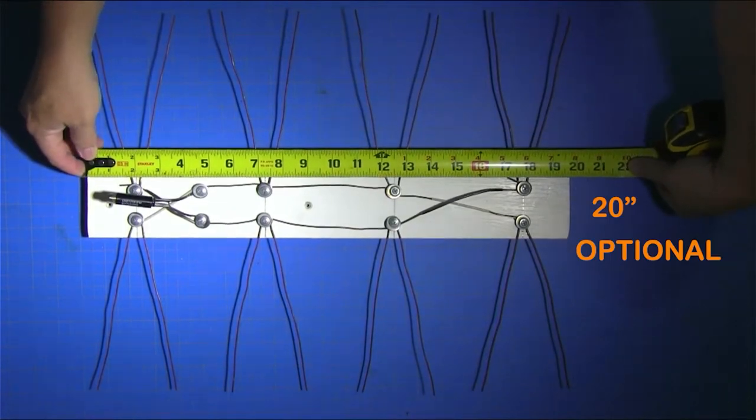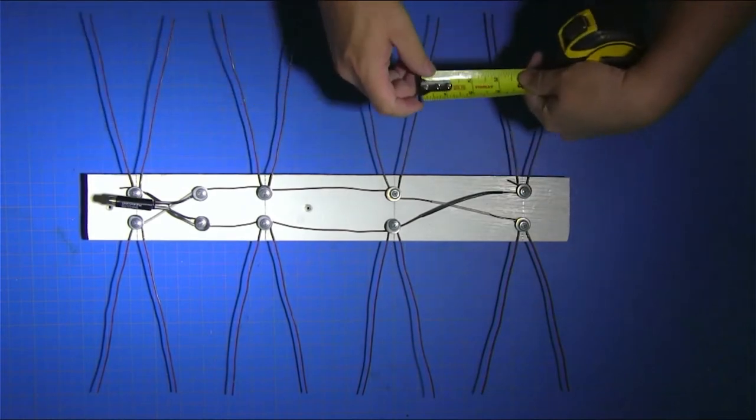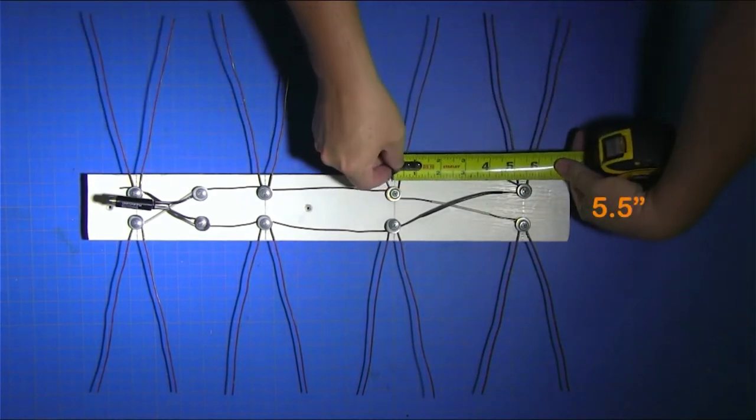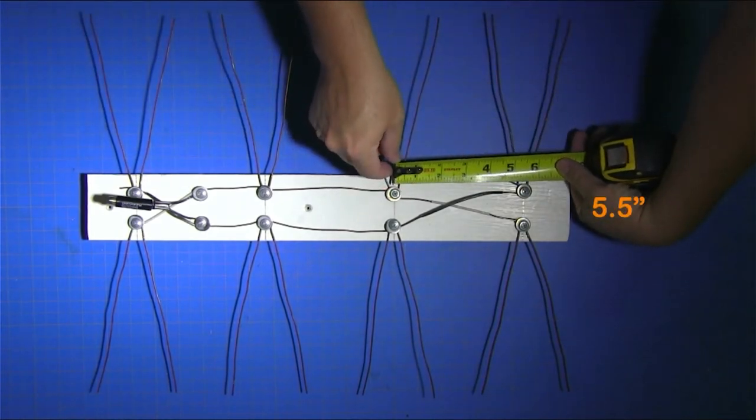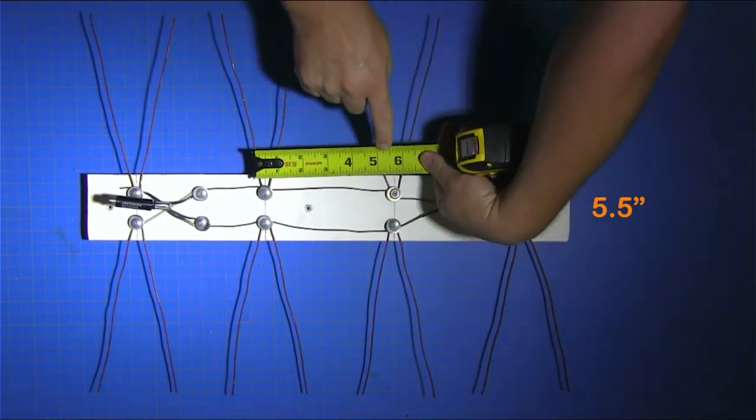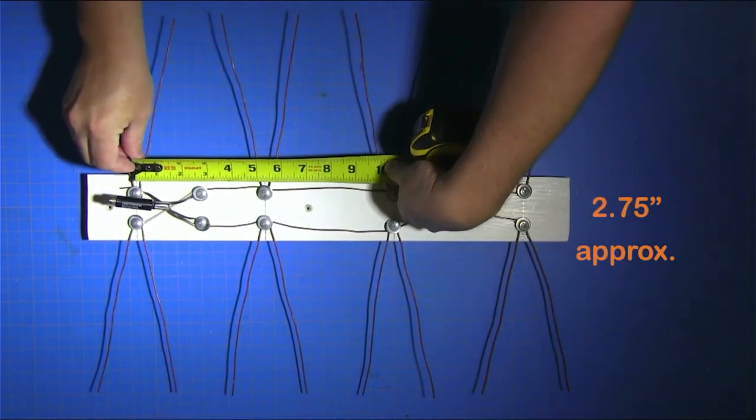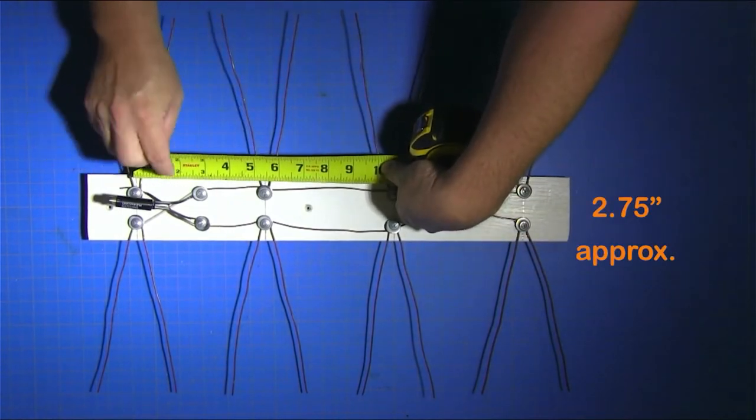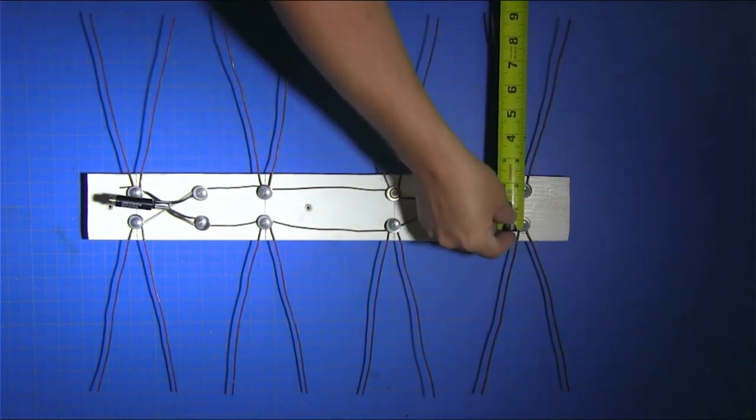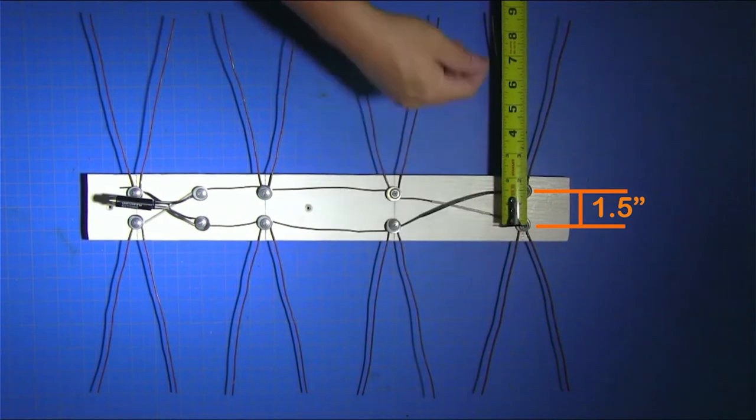After you get your board cut, you're going to want to mark all the locations for the wire. Between the screws it's five and a half inches. You're going to need eight screws, and then the last set of screws are approximately two and three-quarters apart. The distance between each screw is an inch and a half.